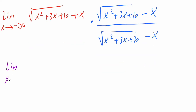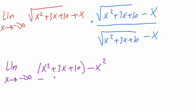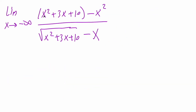We take the limit as x approaches negative infinity and multiply these pieces out. The square root of x squared plus 3x plus 10 times itself cancels the square root and gives x squared plus 3x plus 10. Then the square root piece times negative x and the x times the square root piece cancel each other out. That leaves x times negative x, which is negative x squared. So the x squared terms cancel, leaving the numerator as 3x plus 10, over the square root of x squared plus 3x plus 10 minus x.